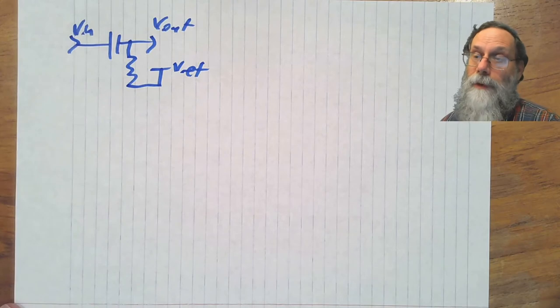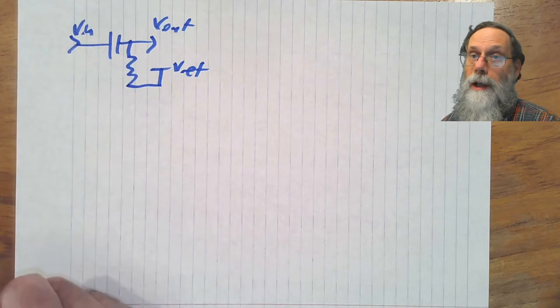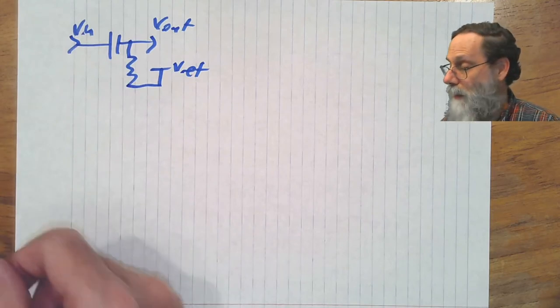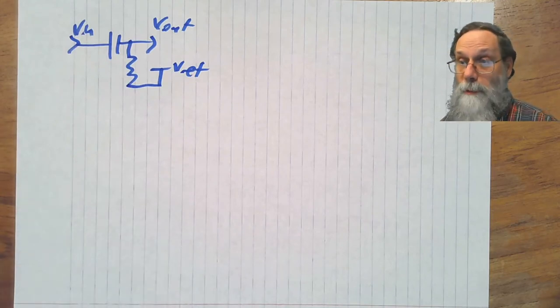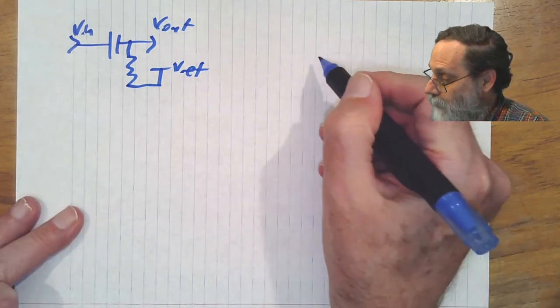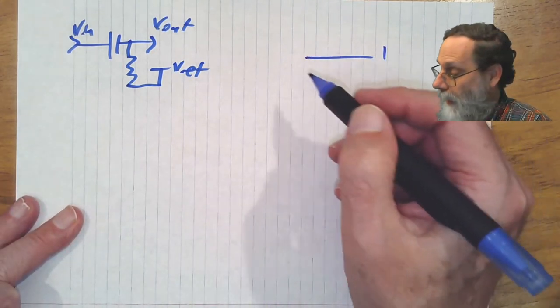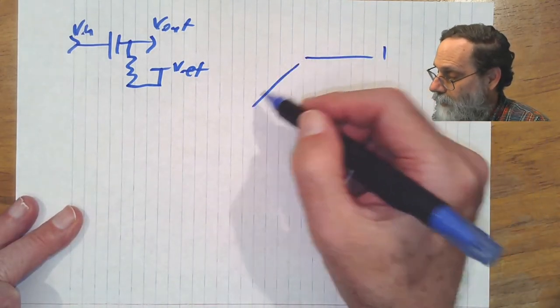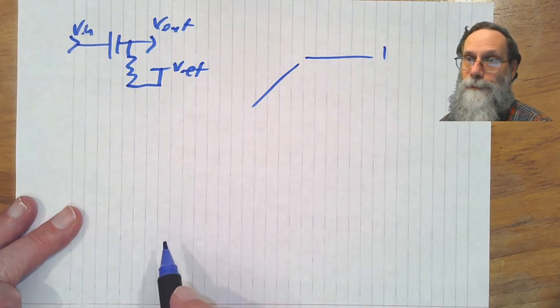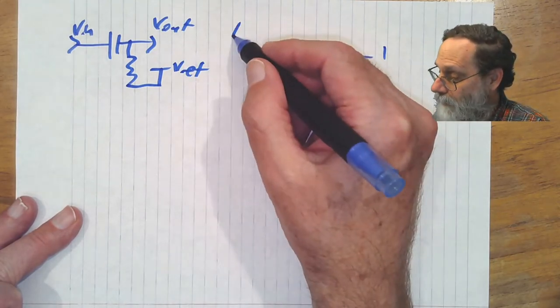If we have very high frequencies, then this is basically a short circuit, and Vout is equal to Vin. So what we expect is that at very high frequencies, we're going to have a gain of one, and at low frequencies, we're going to have attenuation. So this is a high-pass filter.